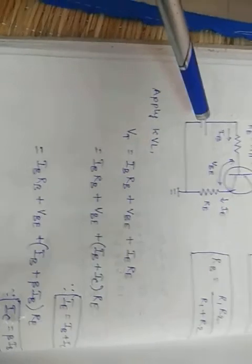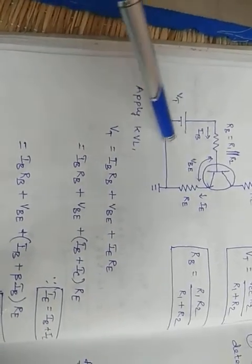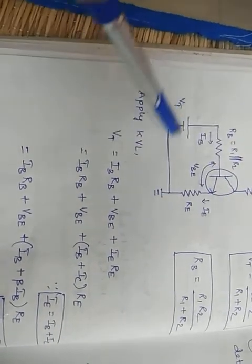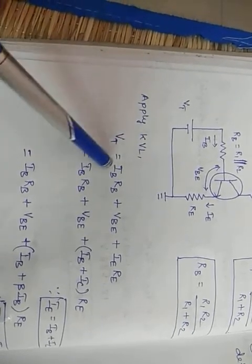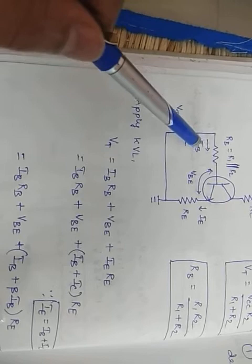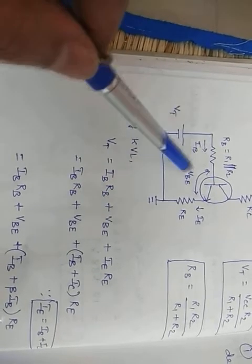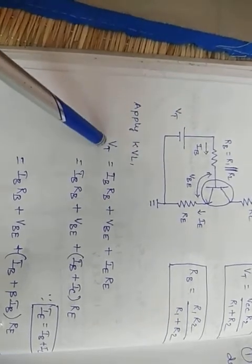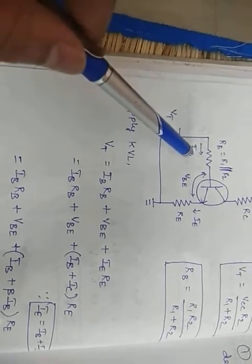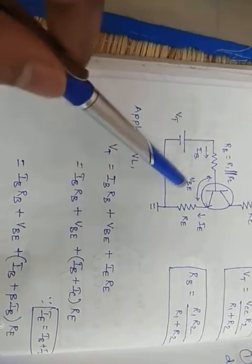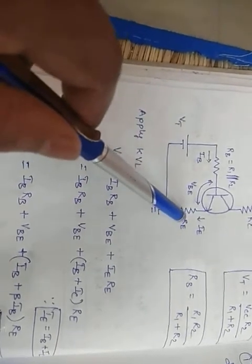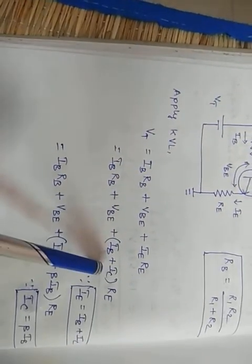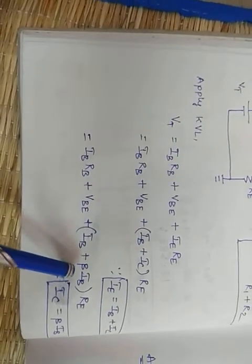Applying KVL to the base-emitter loop: VT = IB × RB + VBE + IE × RE. Since IE = IB + IC and IC = β × IB (where β is the current gain for common emitter configuration), we can substitute to derive IB.